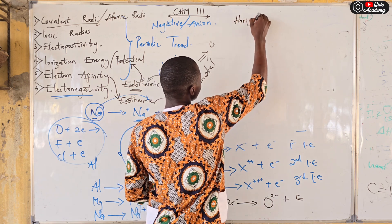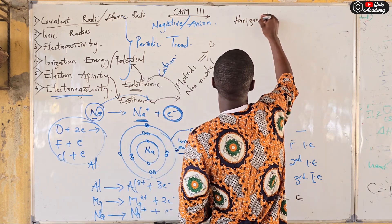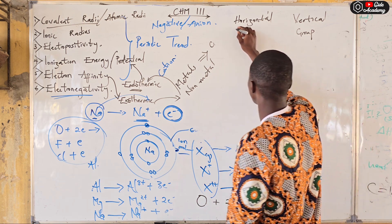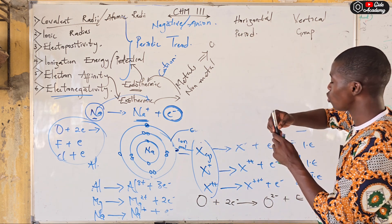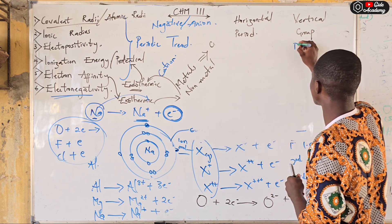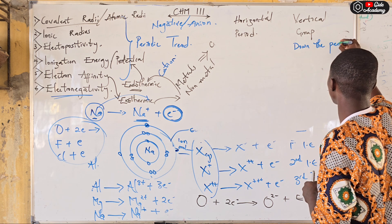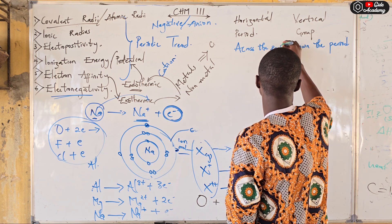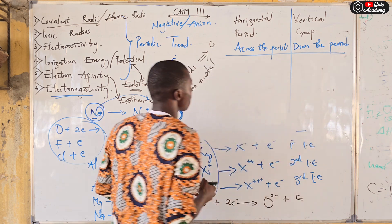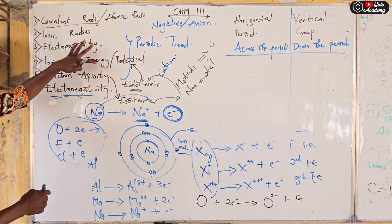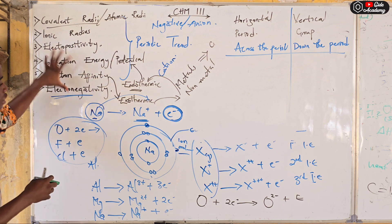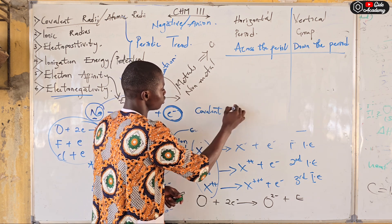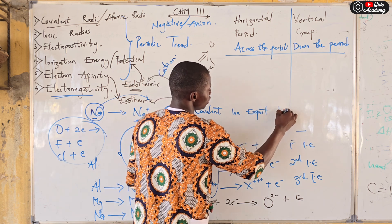We have to consider the periodic trends. The periodic trend can be horizontal or vertical. For vertical, we are talking about group, while for horizontal, we are talking about period. Down the group refers to vertical change, while across the period refers to horizontal change. To remember covalent radii, ionic radii, electropositivity, and ionization energy without cramming, there is a mnemonic I use: 'Covalent ion exports international electrons' — covalent ionization.